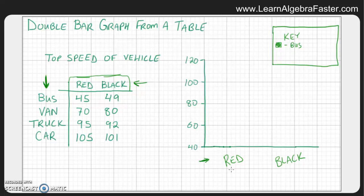Okay, so let's look at, we need red buses, which would be 45. Now let's go to black buses, which is 49. So there you go. We actually already graphed the buses.